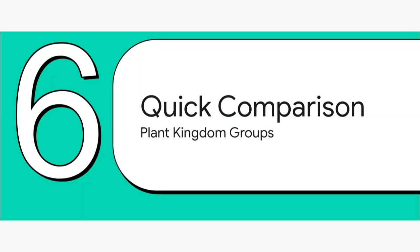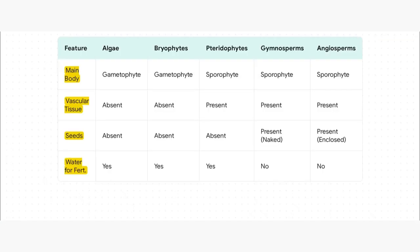That's all five groups covered. Now it's time for the grand finale — a quick comparison of the whole kingdom that's going to tie everything together perfectly. This is your NEET master table. Just follow the trends. Look at the main body: gametophyte, gametophyte — then bam, sporophyte, sporophyte, sporophyte for the next three. See the shift? Vascular tissue: absent, absent — then present, present, present. It starts with pteridophytes.